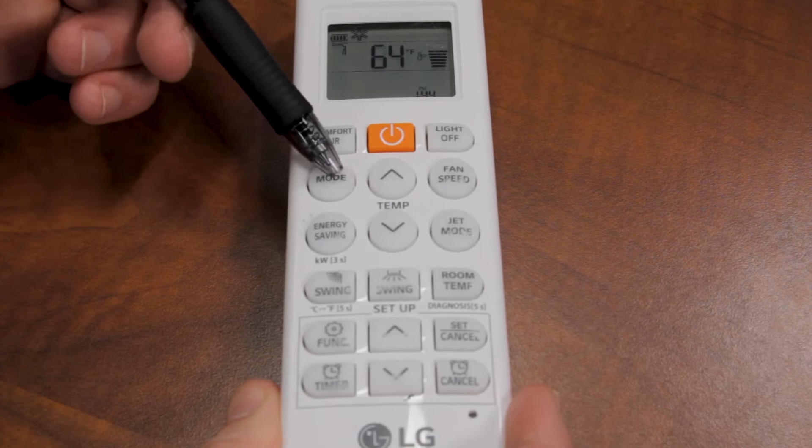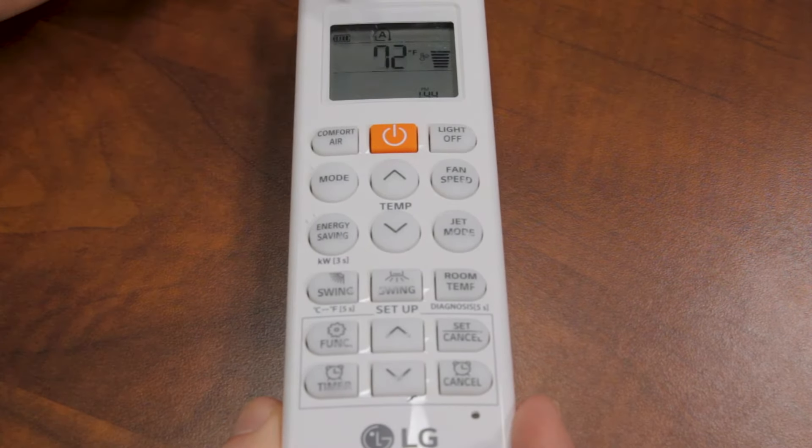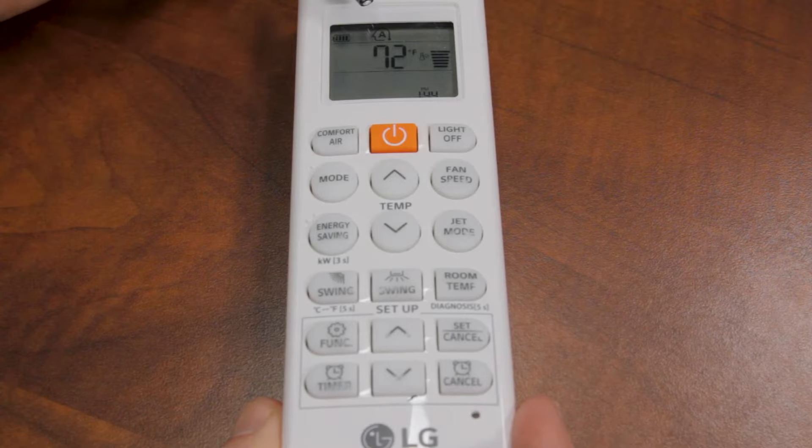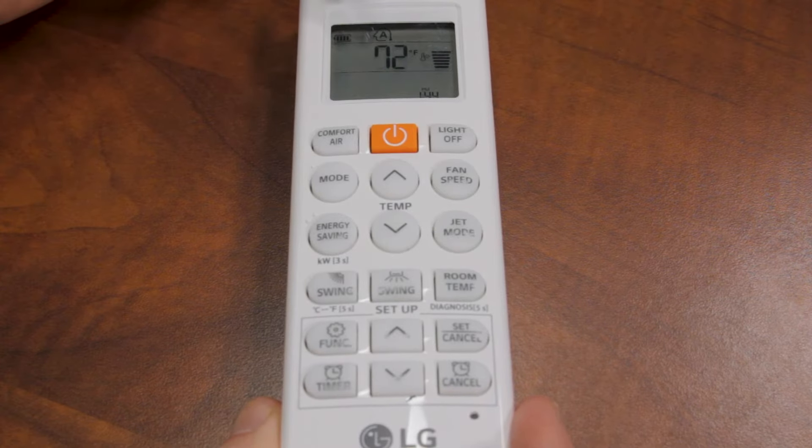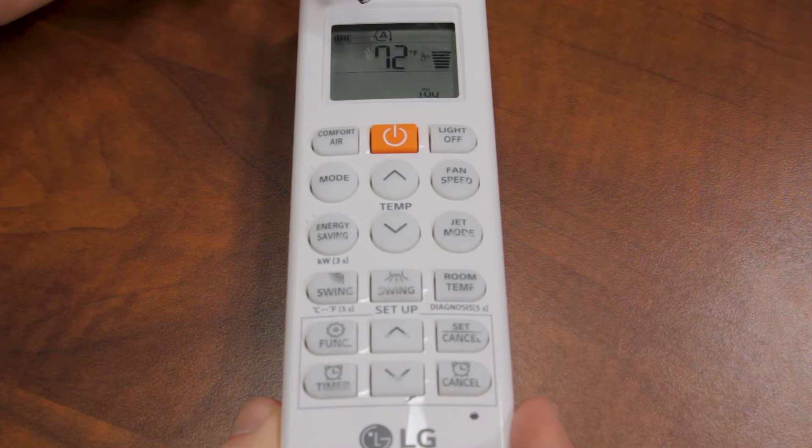Press it again. We're going to go into auto mode. This has the A with the arrow around it. What this is going to do is change the system between heating and cooling depending on the room temperature.